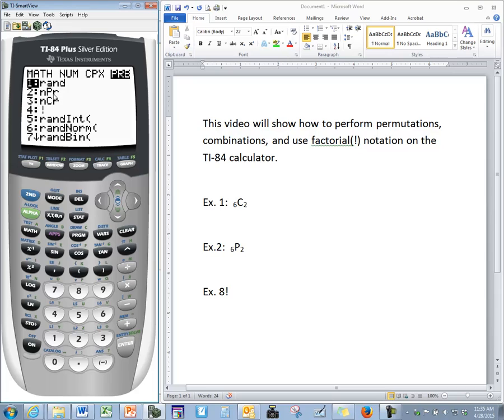Option number two is your permutations formula. We use permutations when an order is expected, so you have first, second, or third place. You have specific positions: president, vice president, secretary.